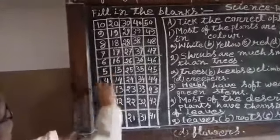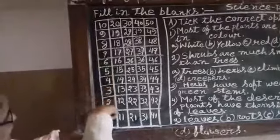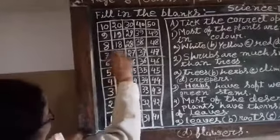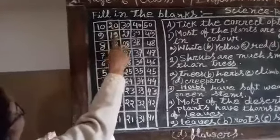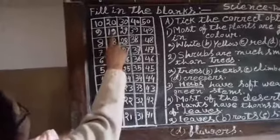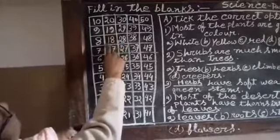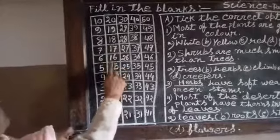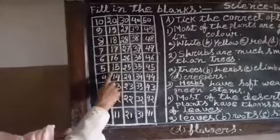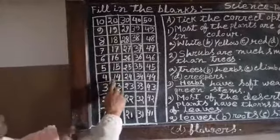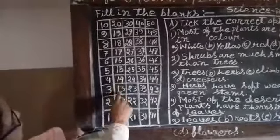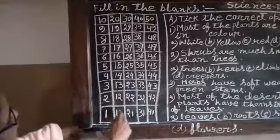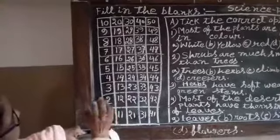Counting down again: 7, 6, 5, 4, 3, 2. Now from 20: 20, 18, 17, 16, 15, 14, 13, 12, 11.